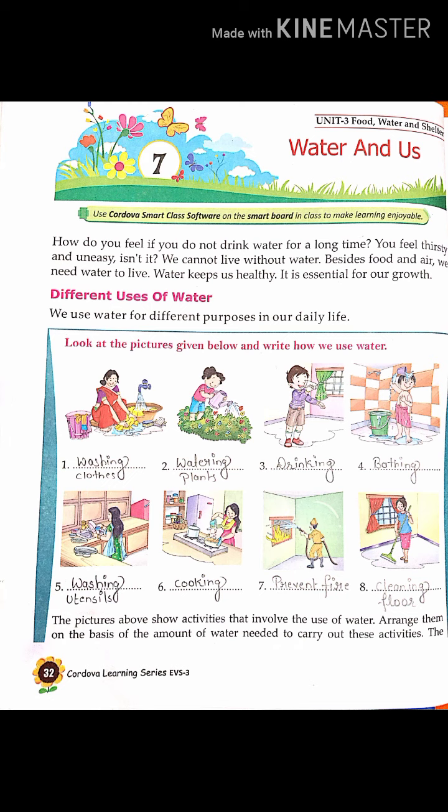We use water for different purposes in our daily life. Look at the picture given in your book and write the use. First picture: a woman washing her clothes — write 'washing clothes.' Second picture: a girl watering the plants — write 'watering plants.' Third picture: a boy drinks water — write 'drinking.' Fourth: bathing. Fifth: washing utensils. Sixth: cooking. Seventh: prevent fire. Eighth: cleaning floor. These are the different purposes for which human beings use water daily.